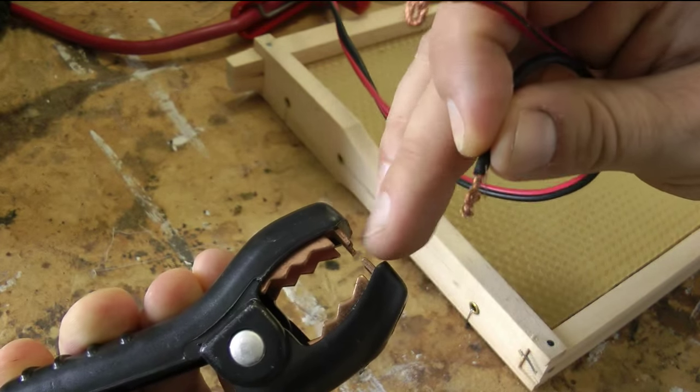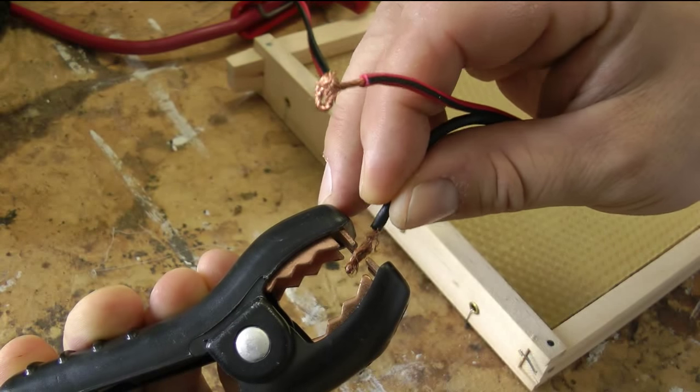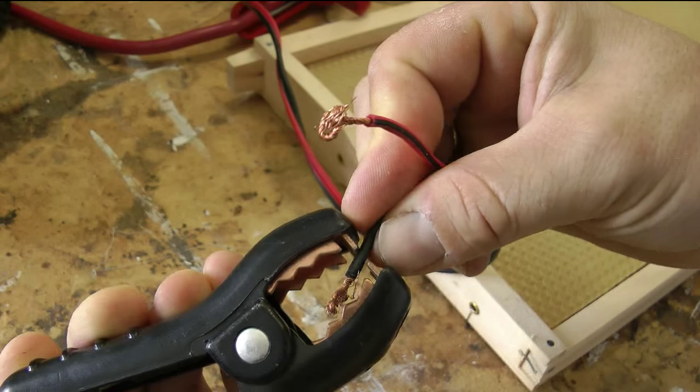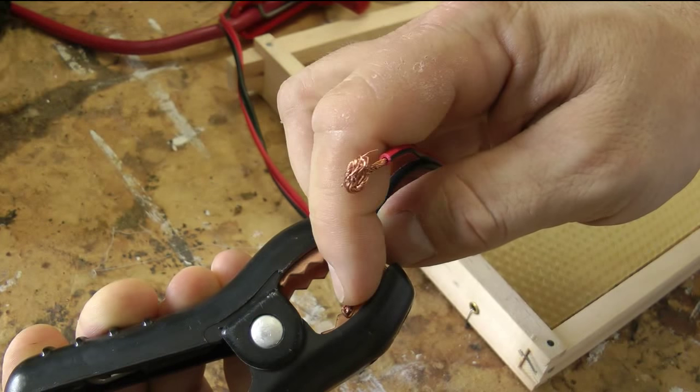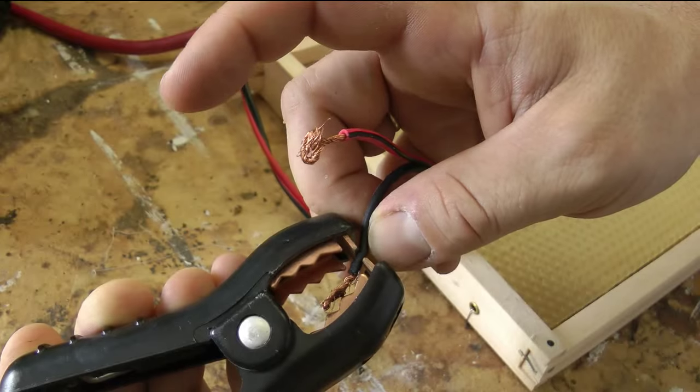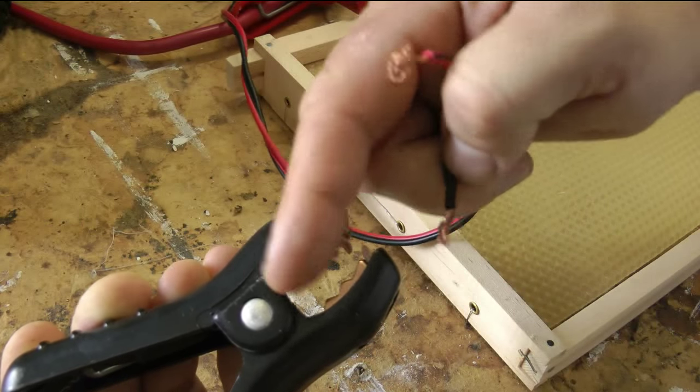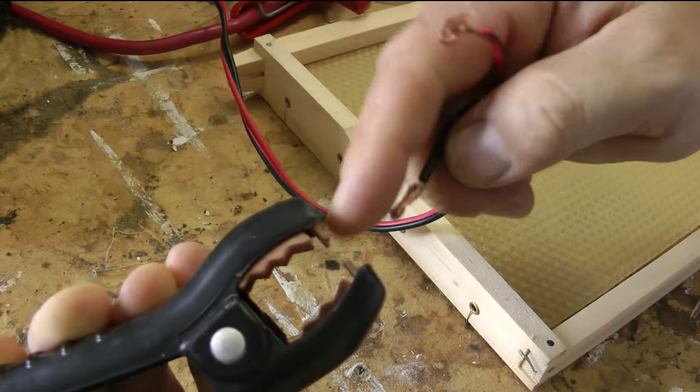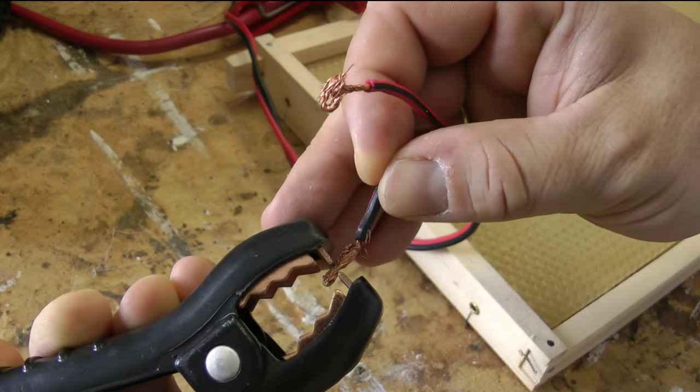And just in case your insulation touches the top bit and just the bottom clamp is touching, you will not get your electricity flowing. So the piece of wire must be touching the top of the clamp there. Make sure that you've got contact in there.